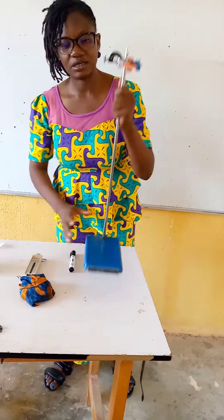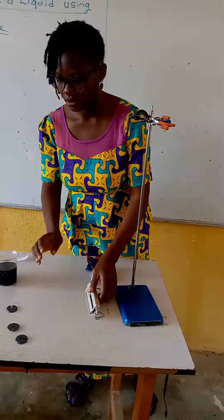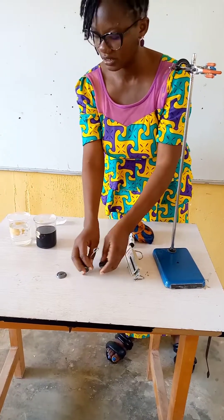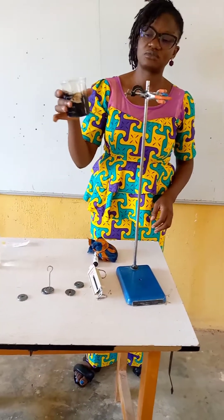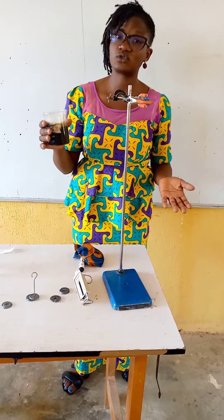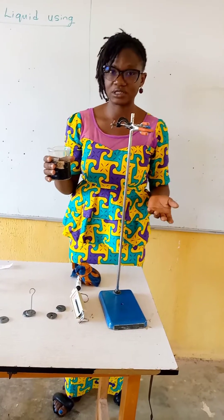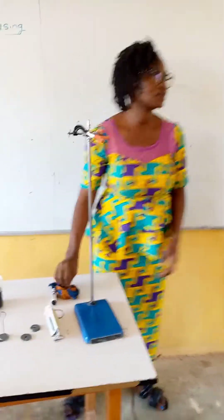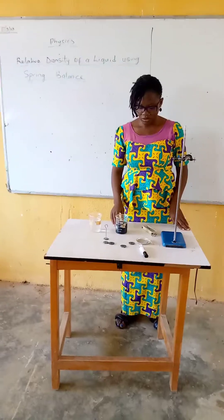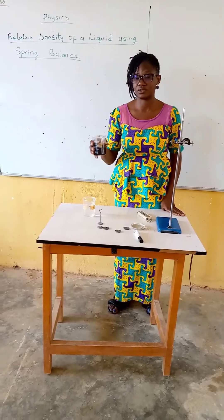The apparatus needed for this experiment are: a little sand spiral spring, slotted masses, water, and then another fluid. You can use other fluids like kerosene, petrol, or diesel — it's your choice or depending on the question being asked. It can be petrol, it can be kerosene, whatever other liquid you want to use.